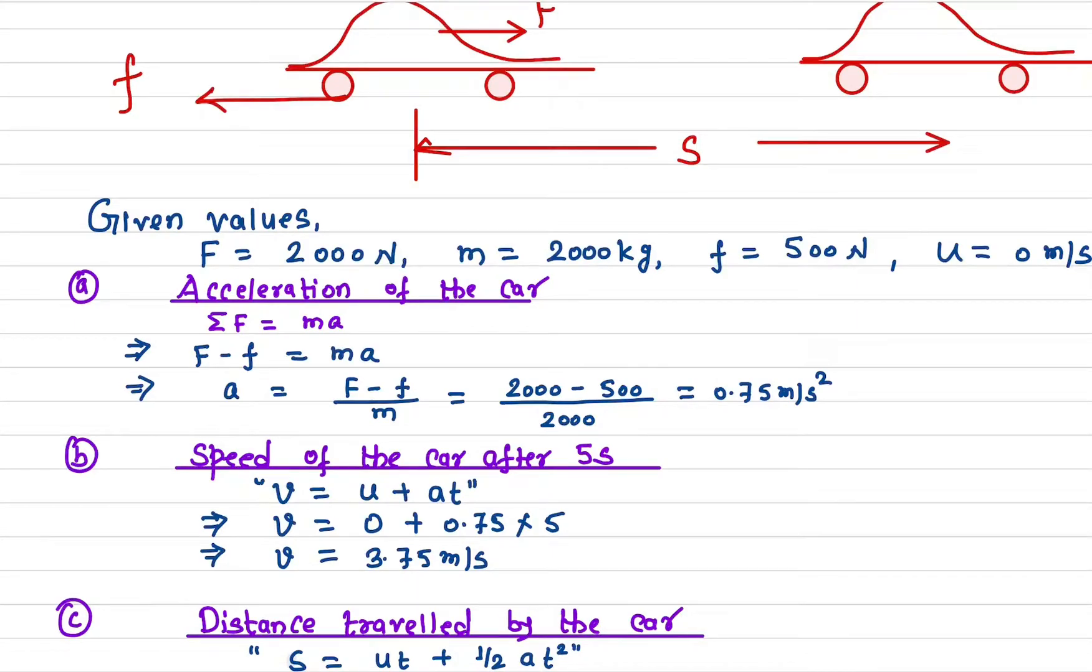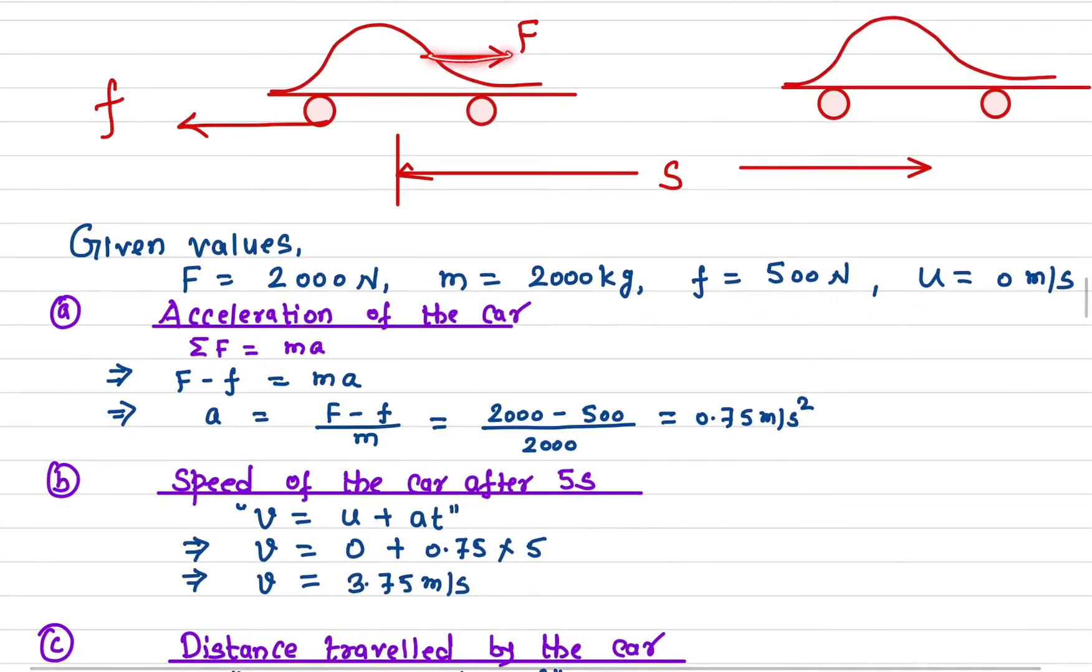One is the applied force and the other is the friction force. According to Newton's second law of motion, F equals ma, and this force is the net force along that particular direction.